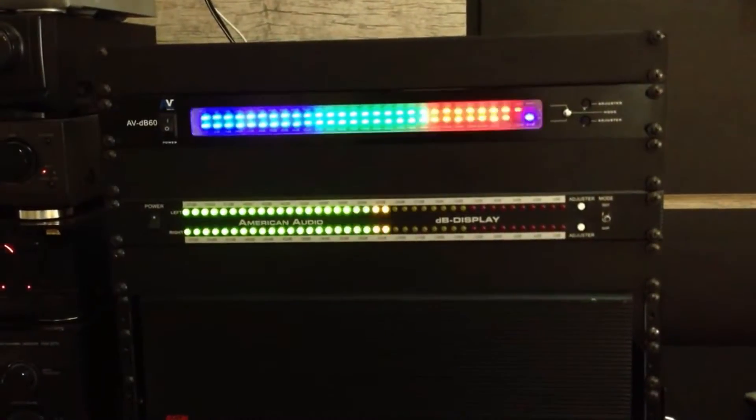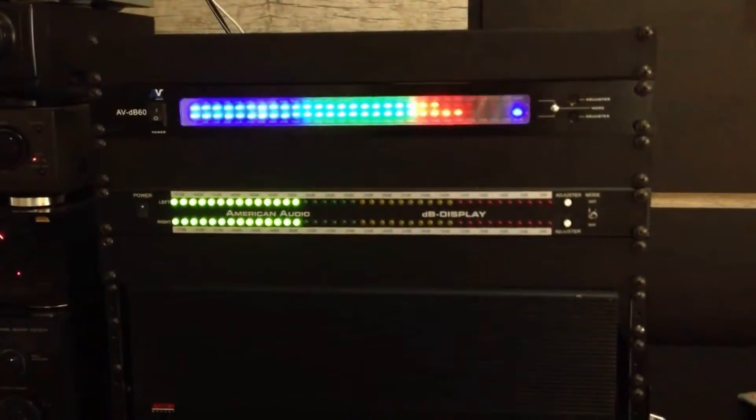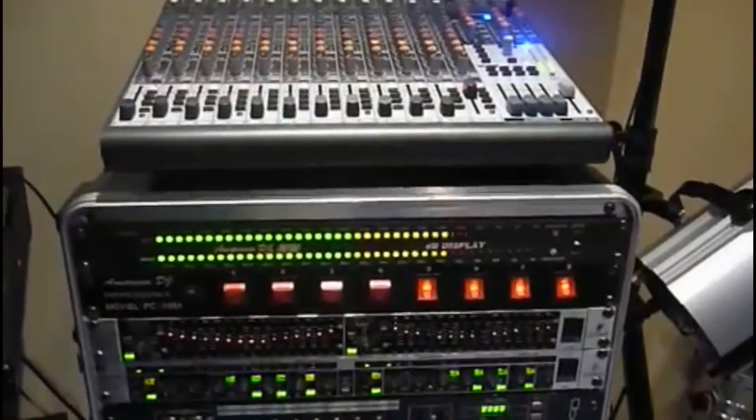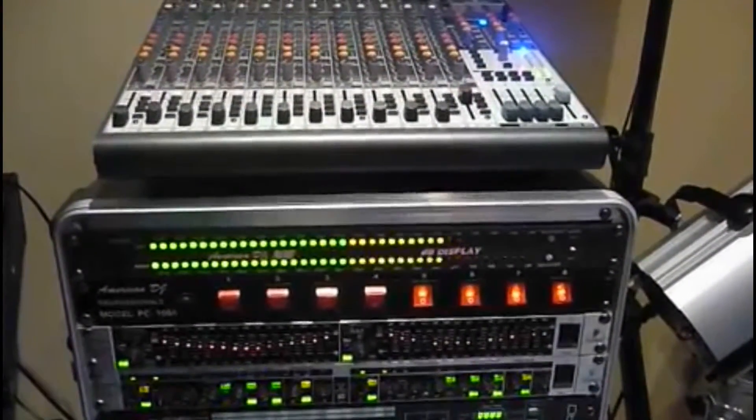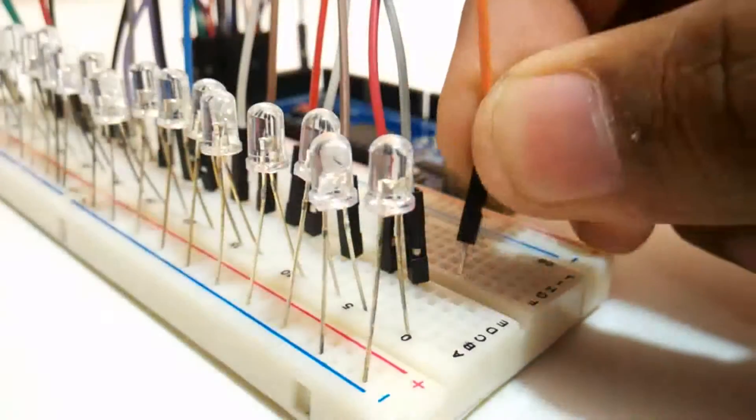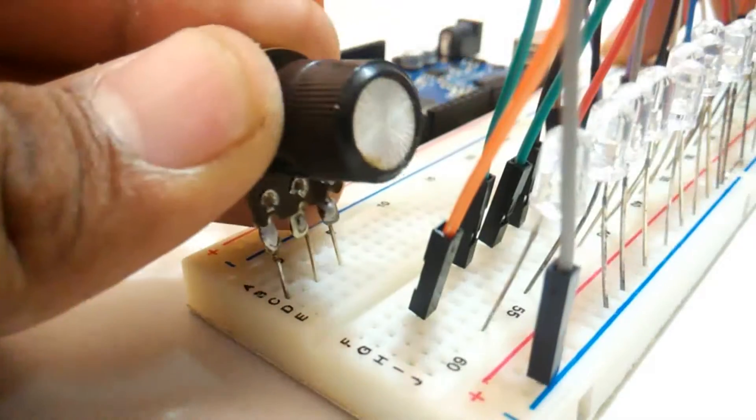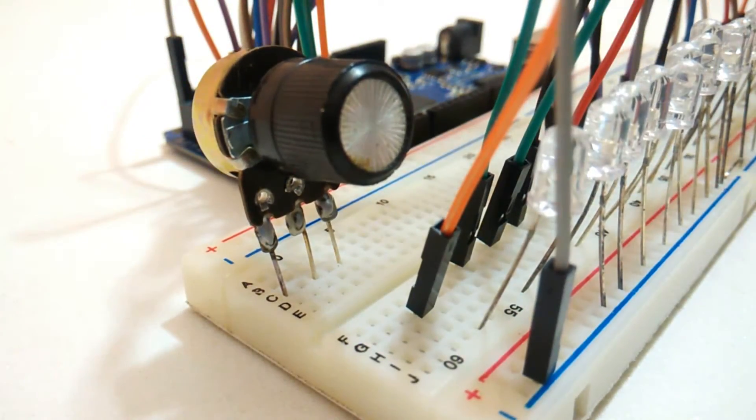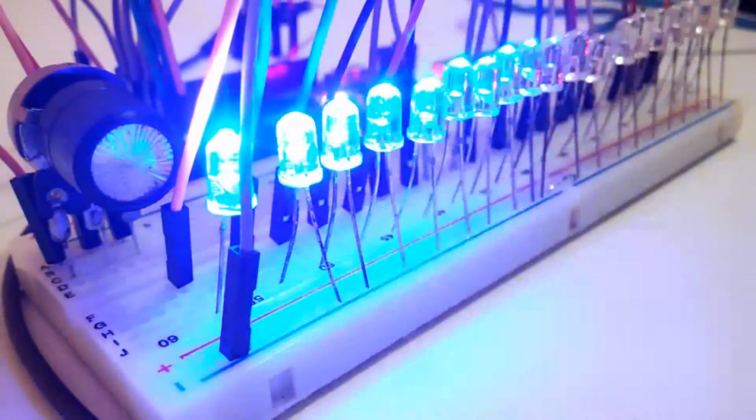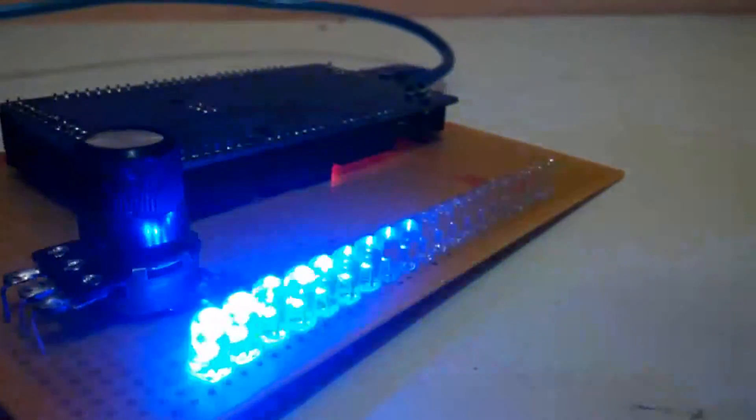Audio decibel meters, music equalizers, and VU meters are most widely used in electronic musical systems. In the first part of this music visualization series, I'll be showing you how easy it is to build one of those music decibel meters by using an Arduino microcontroller.